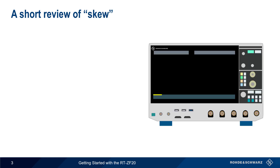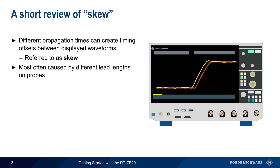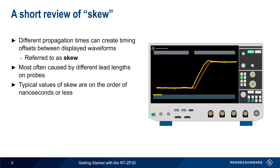Let's start with a brief review. Different propagation times on different oscilloscope channels can create timing offsets between displayed waveforms, and this timing offset is commonly referred to as skew. This variation in propagation time is primarily caused by probes with different lead lengths. The skew between oscilloscope channels is often on the order of nanoseconds or less.